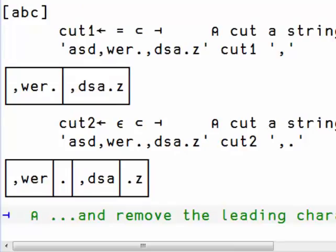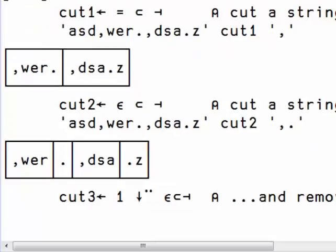Now we want to remove the leading character, so we keep building this function here. So we have the member, we have the same function we had before on the right, and this time we drop one character in each one of the strings that have been cut, effectively removing the delimiter.